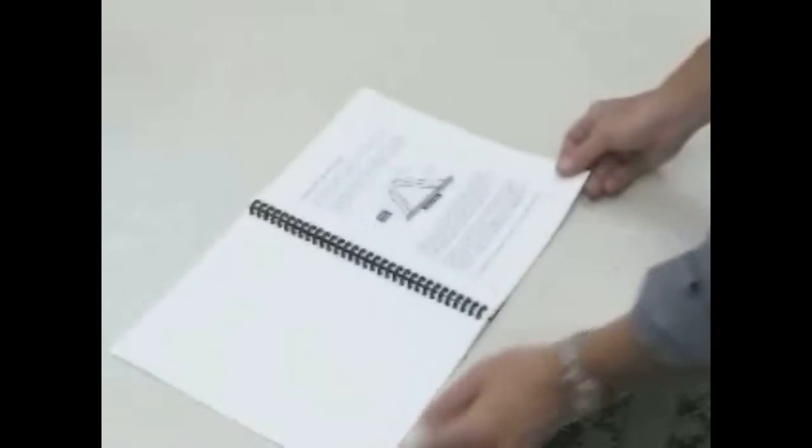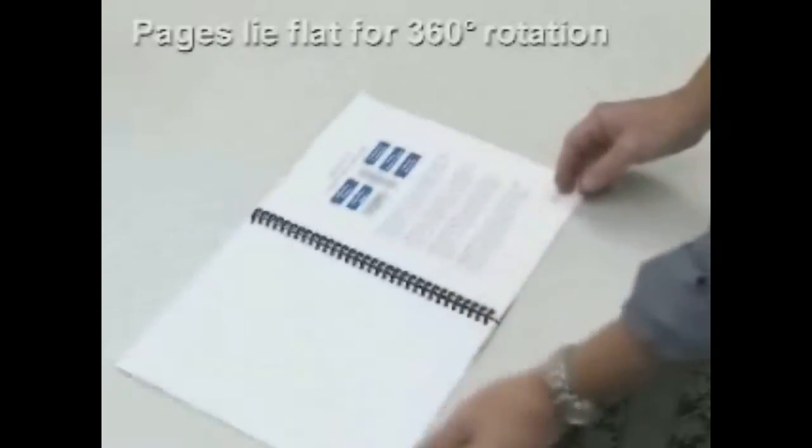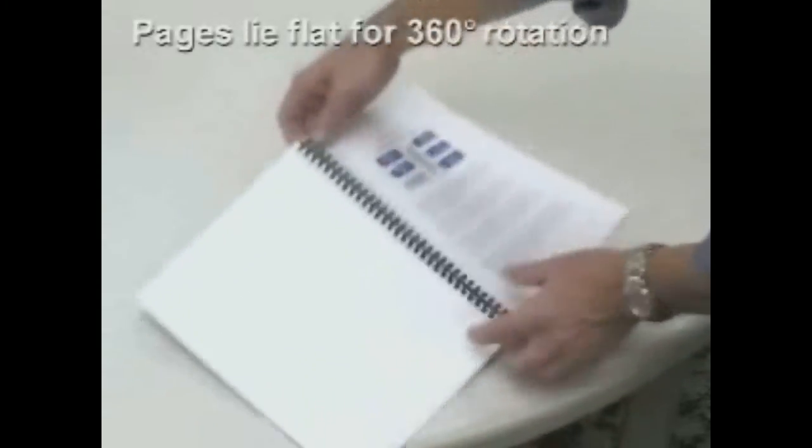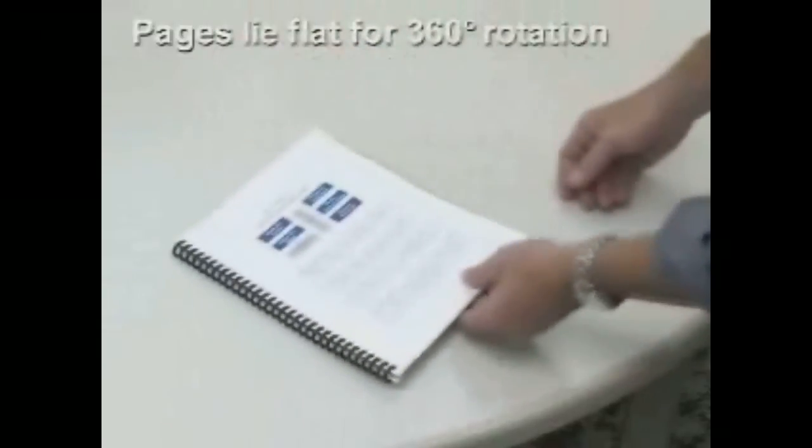ProClick lets pages turn easily and lie flat for easy note-taking and photocopying. 360-degree rotation allows pages to be completely wrapped around.